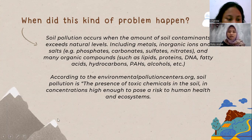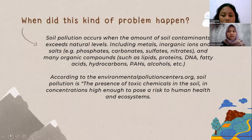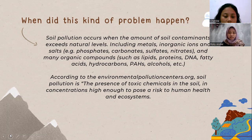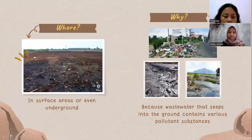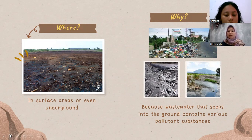These contaminants include metals, inorganic ions, and salts — for example phosphate, carbonate, sulfate, nitrates — and many organic compounds such as lipids, proteins, DNA, fatty acids, hydrocarbons, alcohols, and more. According to environmentalpollutioncenters.org, soil pollution is the presence of toxic chemicals in the soil at concentrations high enough to pose risks to human health and ecosystems. The problem occurs in surface areas or even underground, because wastewater that seeps into the ground contains various pollutants.